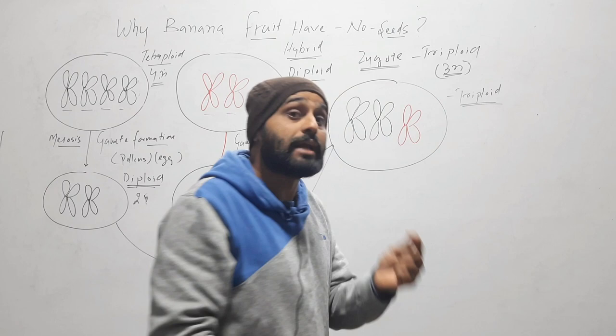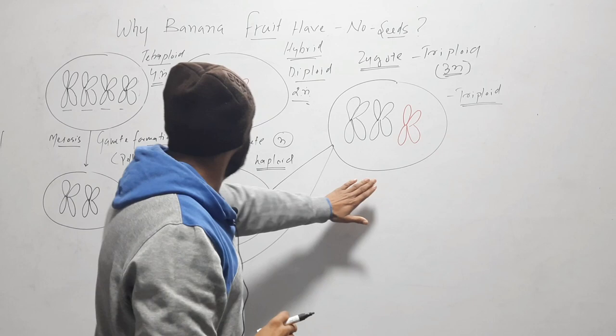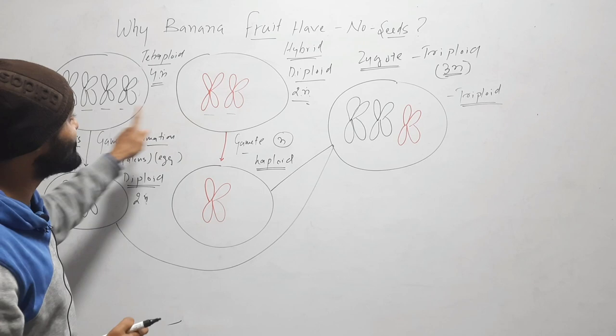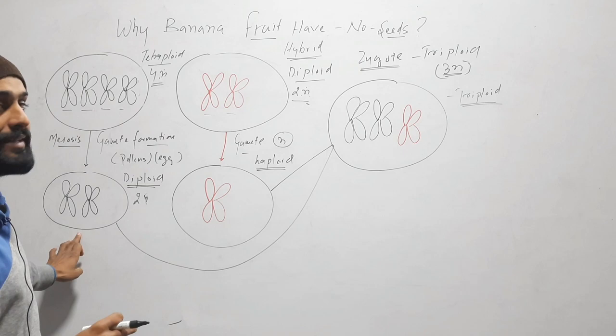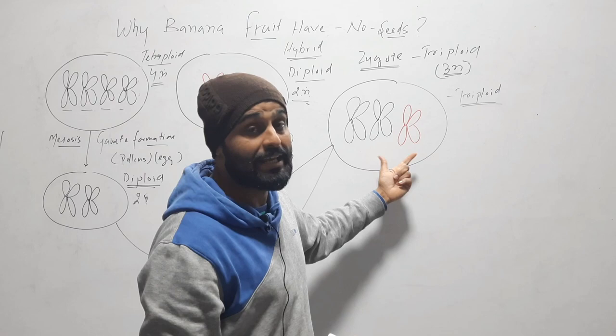This new hybrid produced from the tetraploid and diploid parents is a triploid hybrid. During gamete formation, chromosome numbers are equally divided — if there are 4 they become 2, if there are 2 they become 1. But here we have a situation in which there are 3 chromosomes. How can they divide equally in meiosis?